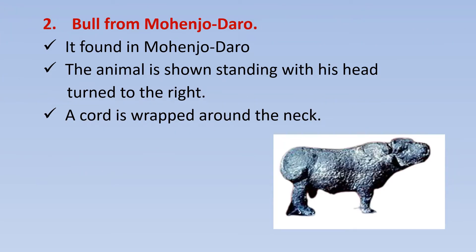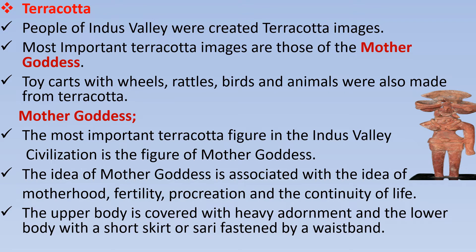The Bull from Mohenjo-daro is found in Mohenjo-daro. The animal is shown standing with his head turned to the right. A cord is wrapped around the neck. Another important artistic work was terracotta. The people of Indus Valley created terracotta images. The most important terracotta images are those of the mother goddesses. Toy carts with wheels, rattles, birds and animals were also made from terracotta. The most important terracotta figure in the Indus Valley Civilization is the mother goddess, associated with the idea of motherhood, fertility, procreation and the continuity of life. The upper body is covered with heavy head ornaments and the lower body with a short skirt or saree fastened by a waistband.